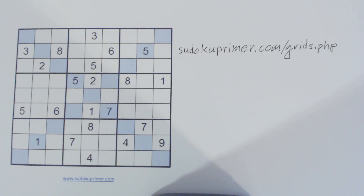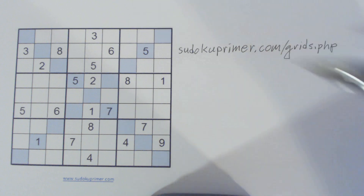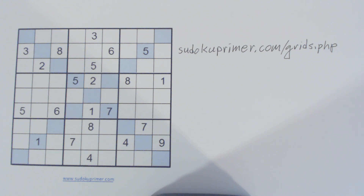This is a diagonal Sudoku puzzle, which is very similar to a regular 9x9 Sudoku puzzle, with the additional constraint that the shaded boxes in the two diagonals also need to contain 1 through 9.